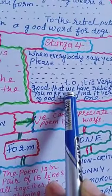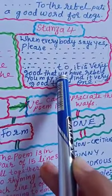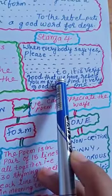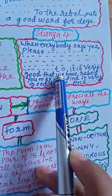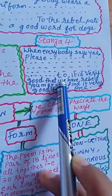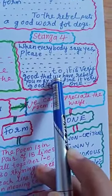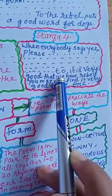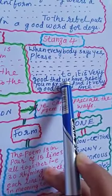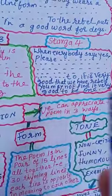Stanza four: When everybody says yes please, the rebel says no thank you. When everybody says no thank you, the rebel says yes please. It is very good that we have rebels. You may not find it very good to be one.